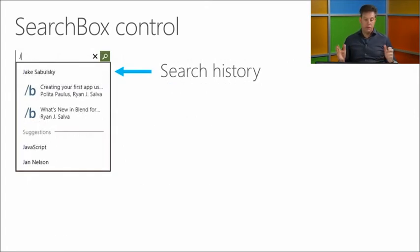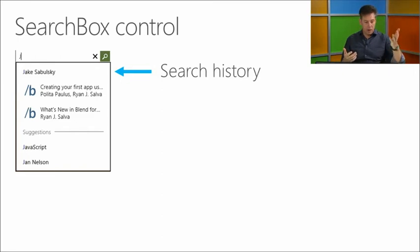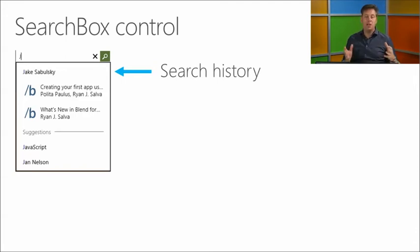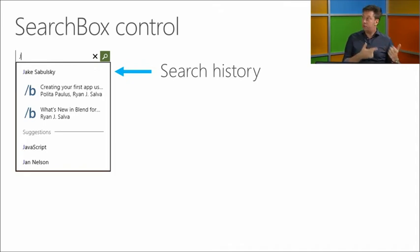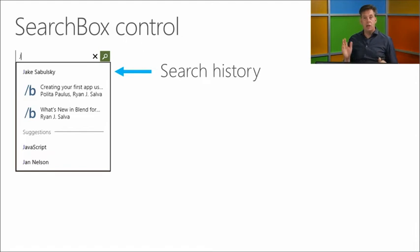The search box control's dropdown shows search history first. People who use search to find specific information will probably use the same query next time. In this example it's a convention schedule app — someone searched for 'Jake Zabulski' and the next time they open the app, just typing 'J' shows the option. The search box control shows the last few searches so you can get back to that information very fast.